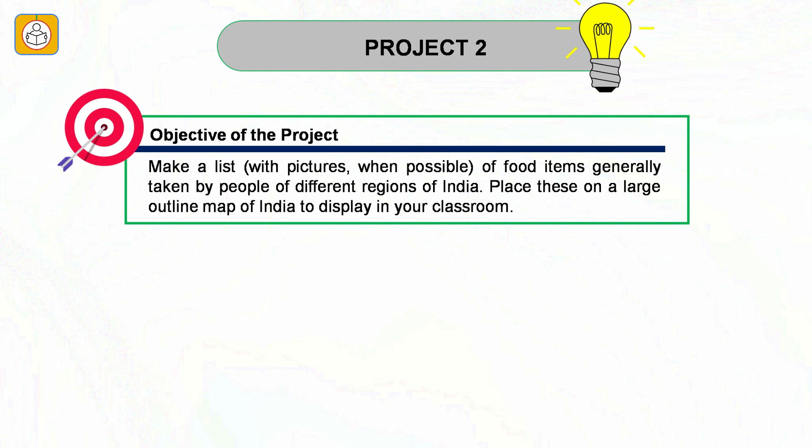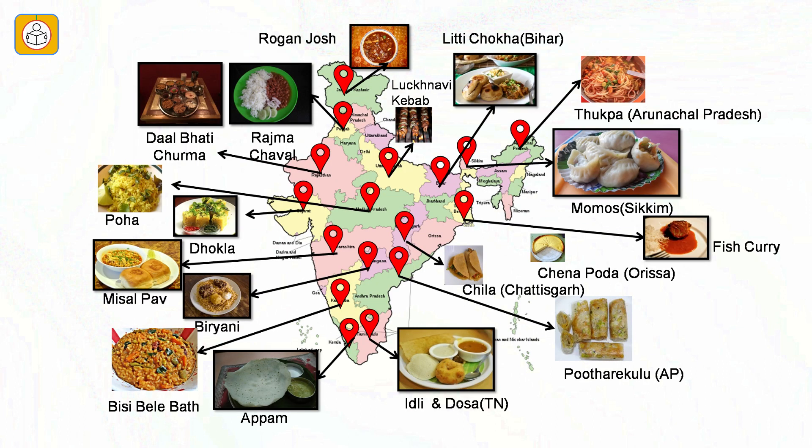Project number two: Make a list of food items generally taken by people of different regions of India and place these on a large outline map of India. In India alone there is a wide variety of food: Idli and Dosa from Tamil Nadu, Putaregalu from Andhra Pradesh, Cheela from Chhattisgarh, Chena Poda from Odisha, Fish Curry from West Bengal, Momos from Sikkim, Tukpa from Arunachal Pradesh, Litti Chokha from Bihar, Lakhnavi Kabab from Uttar Pradesh, Rogan Josh from Jammu and Kashmir, Rajma Chawal from Northern India, Dal Bhati Churma from Rajasthan, Poha from Madhya Pradesh, Dhokla from Gujarat, Misal Pao from Maharashtra, Biryani from Telangana, Bisi Bele Bath from Karnataka and Appam from Kerala.